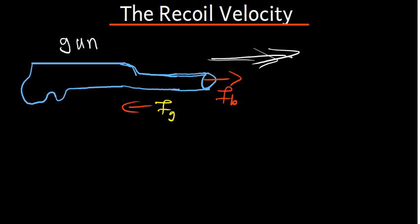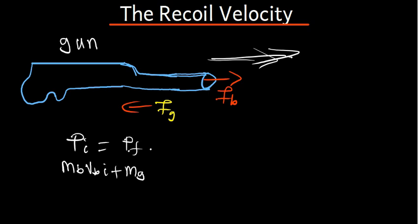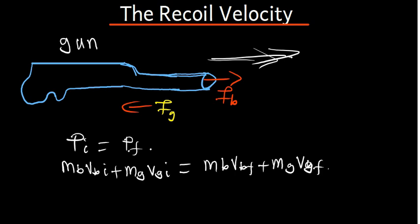What is going to happen is this: the momentum initial has to be equal to the momentum final. We have got two things — the momentum of the bullet and the momentum of the gun. So we are going to say the mass of the bullet times the velocity of the bullet initially, plus the mass of the gun times the velocity of the gun initially, has to be equal to the mass of the bullet times the velocity of the bullet final, plus the mass of the gun times the velocity of the gun final.